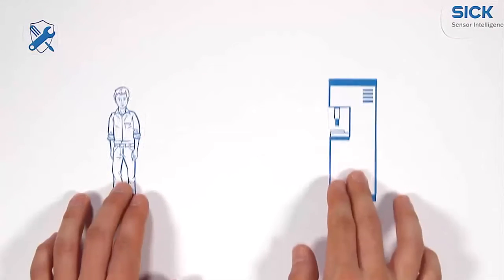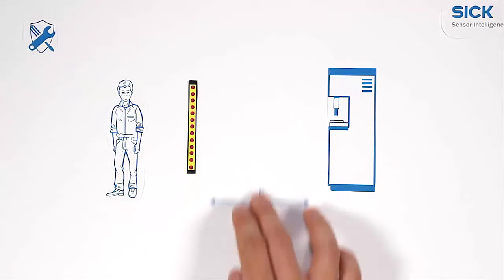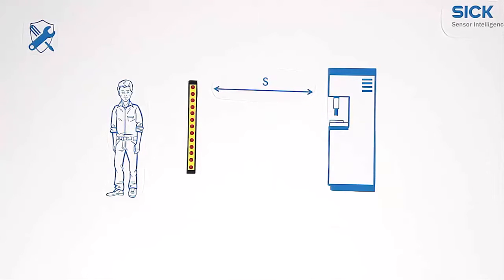For a correct installation, the minimum distance between the machine and the active optoelectronic protective devices is crucial. It can be determined with this formula.